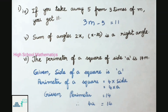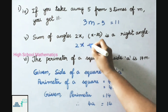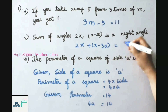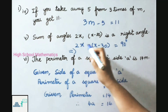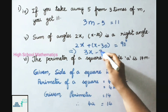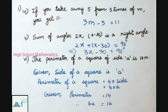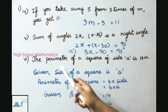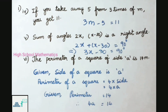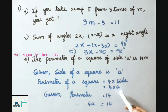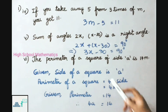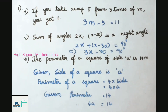Fifth: the sum of angles 2x and (x − 30) is a right angle. Sum means 2x + x − 30 equals 90 degrees. That gives 3x − 30 = 90 degrees. Sixth: the perimeter of a square of side a is 14 meters. Perimeter of a square = 4 × side = 4a, and the given perimeter is 14. So the simple equation is 4a = 14.